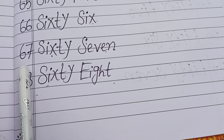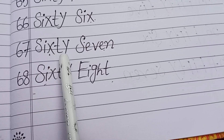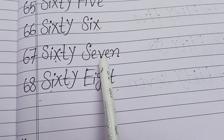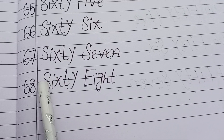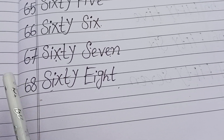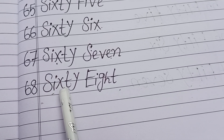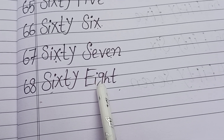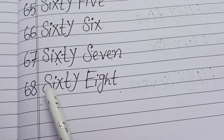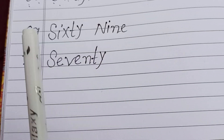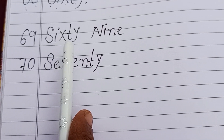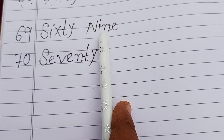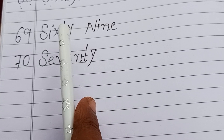Sixty-seven: S, I, X, T, Y, S, E, V, E, N. Seven. Sixty-seven. Sixty-eight: S, I, X, T, Y, E, I, G, H, T. Eight. Sixty-eight. Sixty-nine: S, I, X, T, Y, N, I, N, E. Nine. Sixty-nine.